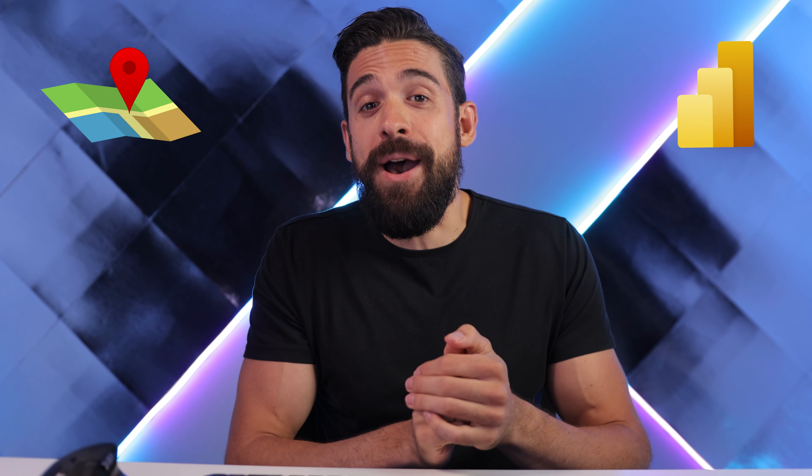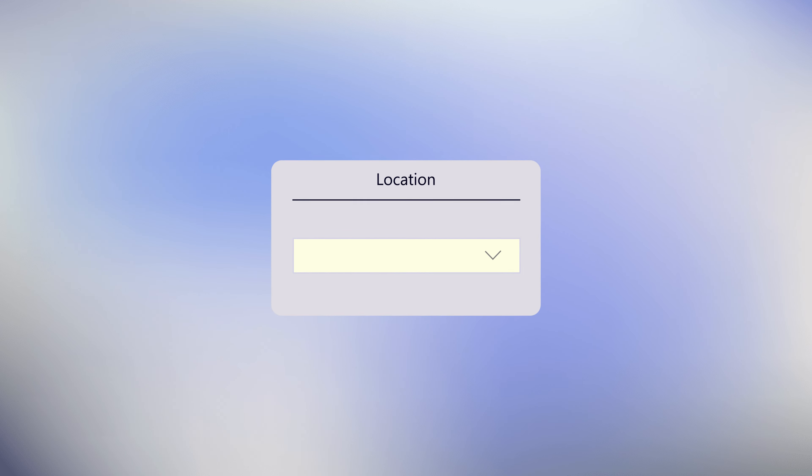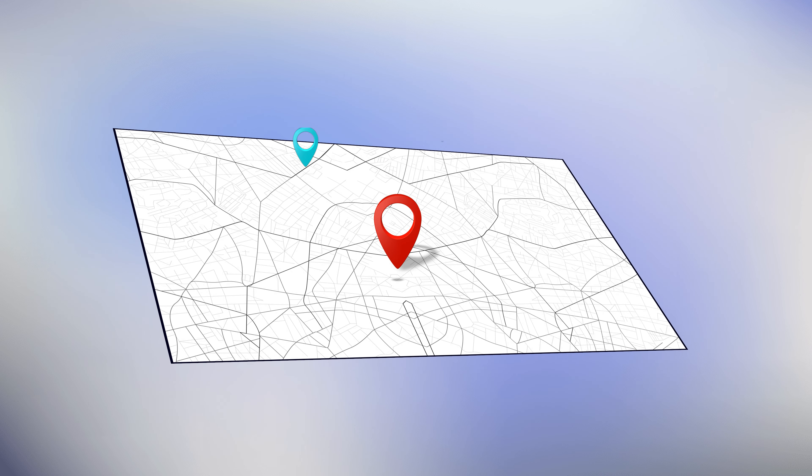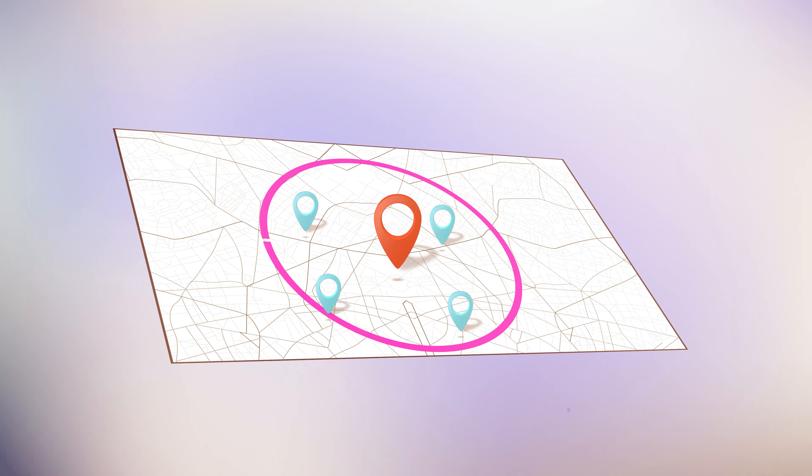Map visuals can be great for your Power BI reports when you need spatial context, meaning how things are located relative to one another. One functionality I often integrate in my Power BI reports is the ability to pick a location, set a certain distance, and then see only those other locations that fall within that distance. In this video, I'm going to show you how to set it up.